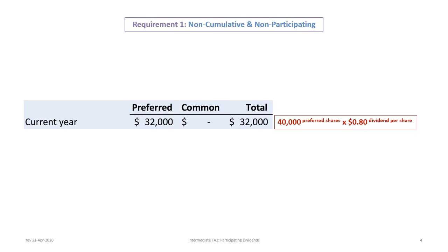Let's begin with non-cumulative and non-participating preferred shares. The company has issued a total of $204,000 in dividends to be allocated between preferred and common shareholders. We always start with the preferred shareholders, who get their dividends first. Since the preferred dividends are non-cumulative, we don't need to worry about any dividends in arrears — only the current year dividend. There are 40,000 preferred shares paying an $0.80 dividend per share, so that's $32,000 in preferred dividends.